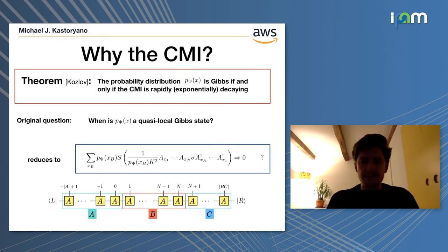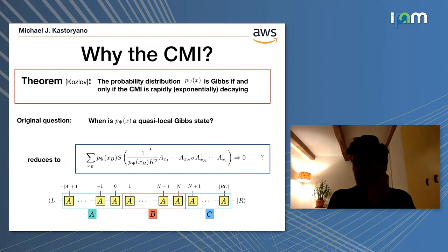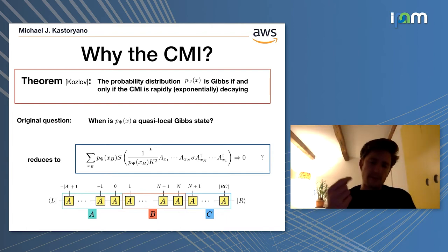It means that from our original question, which is when is P Psi a quasi-local Gibbs state, we can reduce it to this much more convenient expression, which is when is the expectation value in this measure of the von Neumann entropy of this operator, when does it go to zero? Some of you might recognize this expression as being related to the localizable entanglement. It is essentially the localizable entanglement, but where you pick a specific basis, you don't take the optimum overall classical basis.